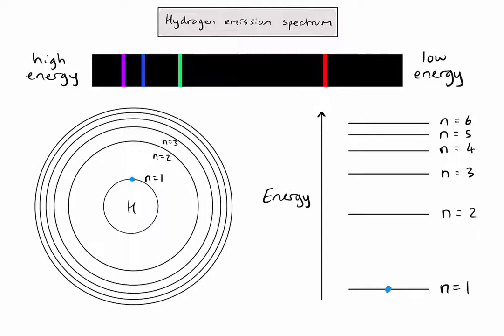Given that there are four lines on the hydrogen emission spectrum, let's start with the red line, which is the lowest energy or lowest frequency transition. We're looking for the smallest gap — the smallest drop down to the second energy level — and that's going to be a transition from the third energy level dropping down to the second.